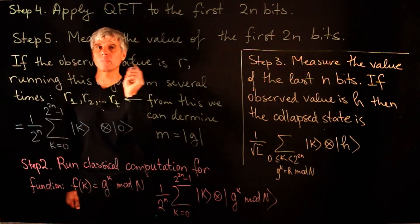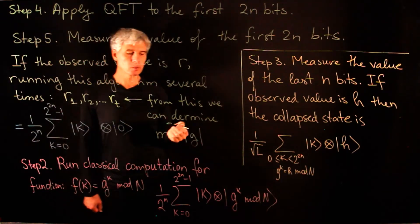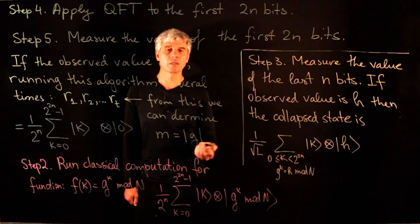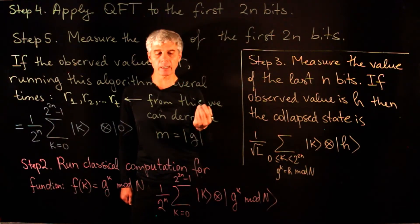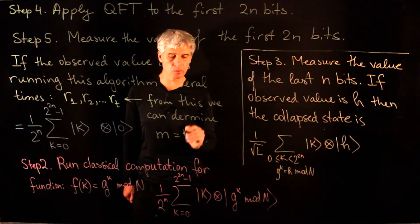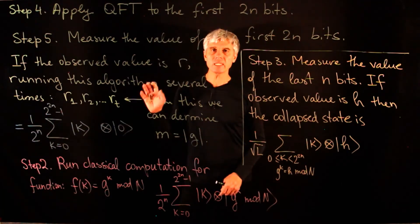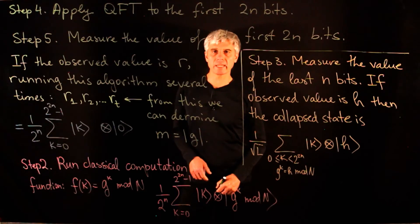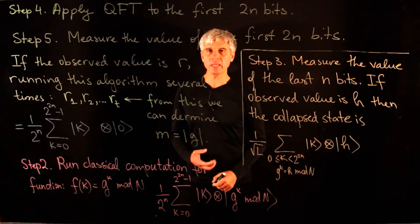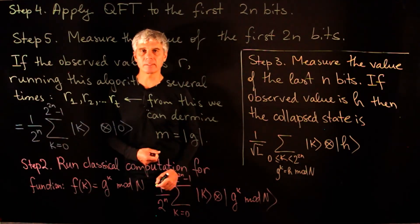Of course, any quantum algorithm is probabilistic, so we are not ever guaranteed a certain result, but we are guaranteed to get the correct result with high probability. These are the steps of Shor's algorithm. Next we are going to discuss these steps in detail and analyze their complexity.